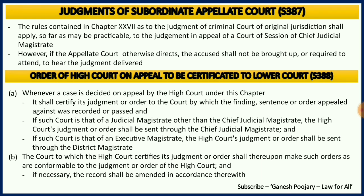Section 387 discusses about judgments of subordinate Appellate Courts. It should follow all the procedures as per chapter 27 of CRPC, which discusses about the judgment of criminal courts. However, there is one exclusion here: if the Appellate Court decides that the accused need not be present in the court while pronouncing the judgment, it can do the same without the accused being present there. That is one possibility available under section 387.